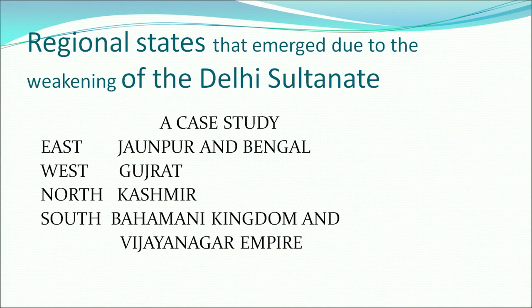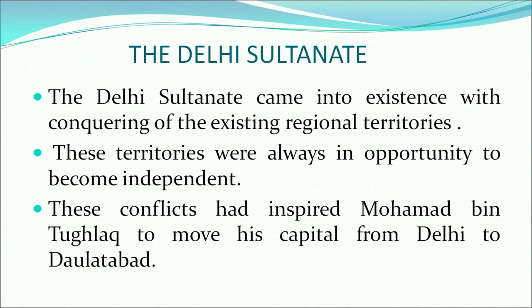We have chosen a few from all four directions of India: from the east, Jaunpur and Bengal; west, Gujarat; north, Kashmir; and south, the Bahmani Kingdom and the Vijayanagar Empire. The Delhi Sultanate came into existence by conquering these regional territories. Whenever these regional territories got the opportunity to become independent, they tried to do so. This led to continuous conflict and also inspired Muhammad bin Tughlaq to move his capital from Delhi to Daulatabad, thinking that by shifting his capital he could control his territory better.